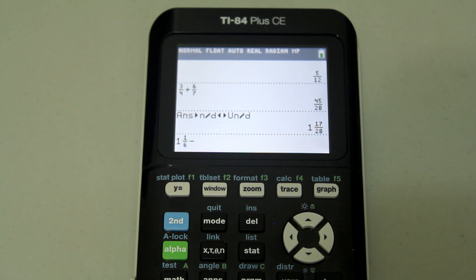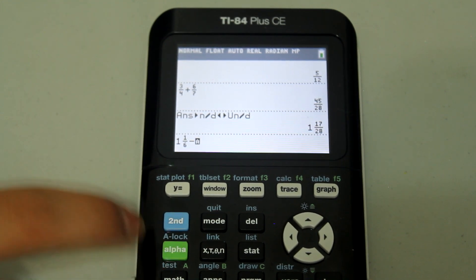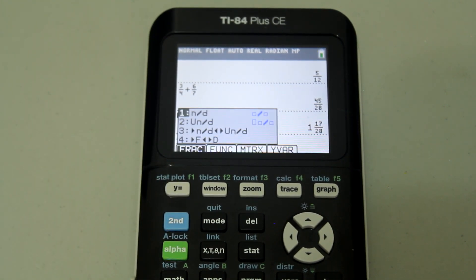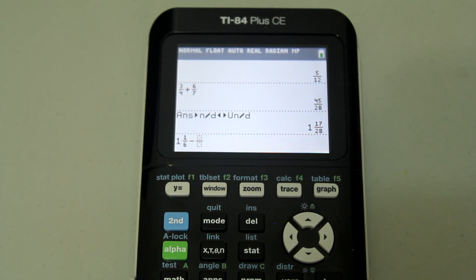Let's say subtract alpha y equals the first option. Let's subtract three fourths. So three arrow down, four right and enter and that gives you the answer in a fraction form.